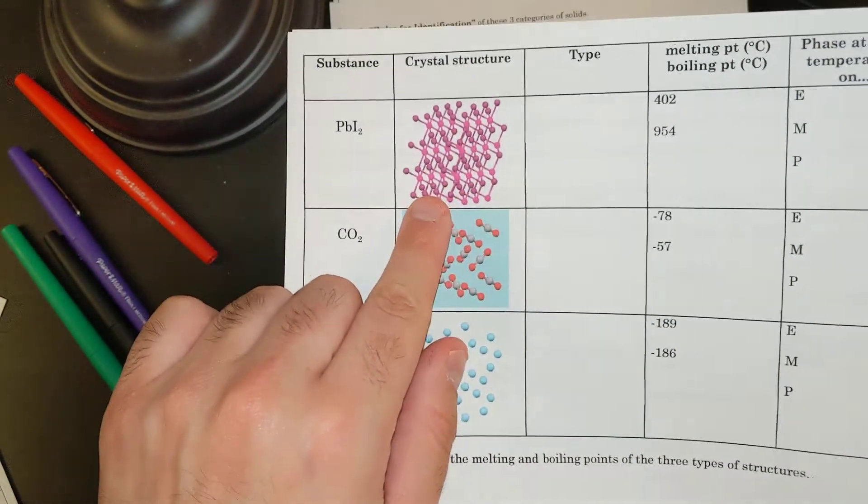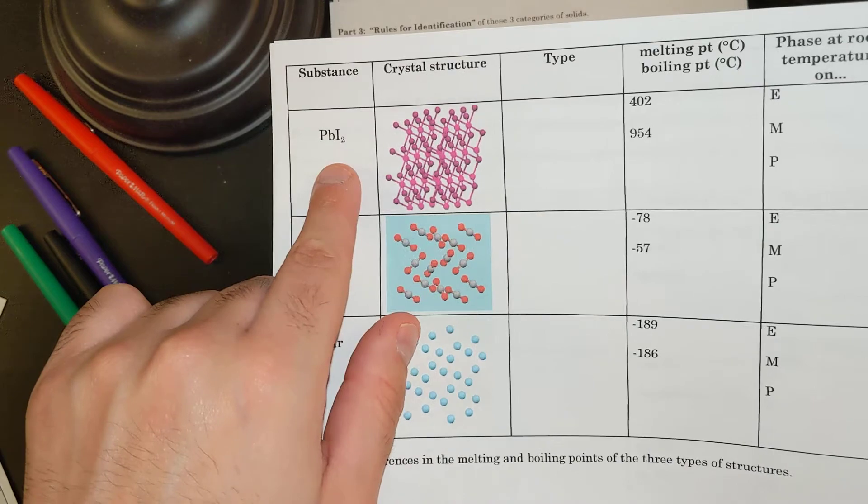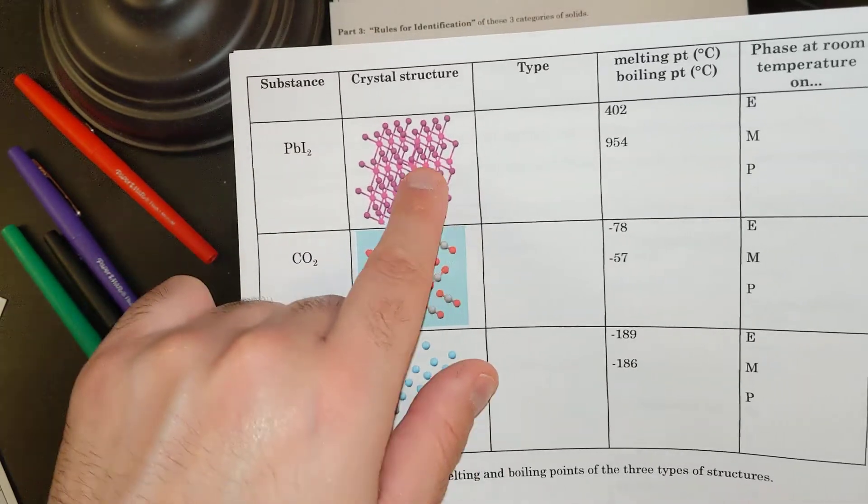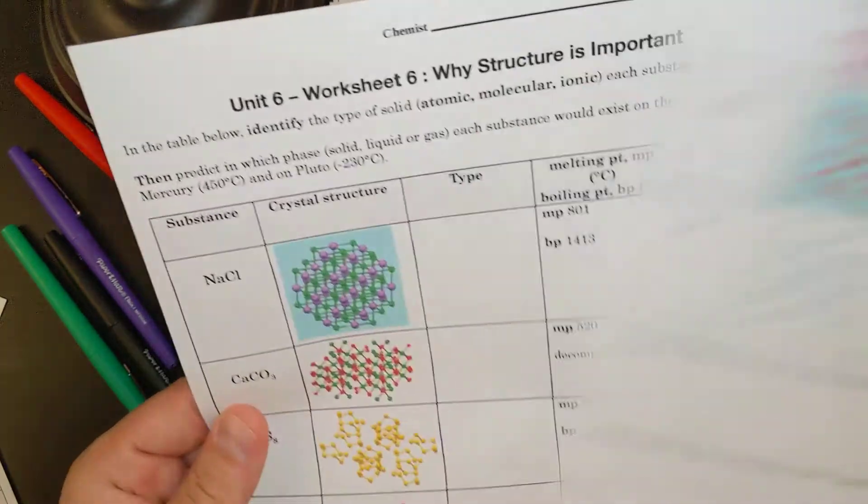So for example, if I look at something like, let's look at a new one. If I had PbI2, I have two different colors here. This is an ionic compound, metal and nonmetal, and it's all connected. I have a dark purple and light purple. Boom, ionic. That's a type of solid.